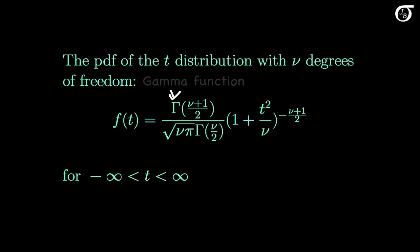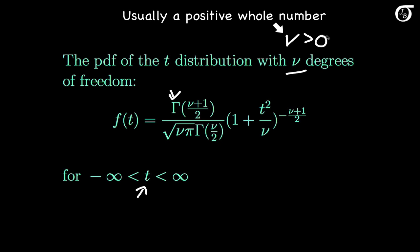If a random variable has a t-distribution, then it can take on any finite value. There is one parameter, ν, the degrees of freedom. In practice this will typically be a positive whole number value, but it doesn't have to be an integer.